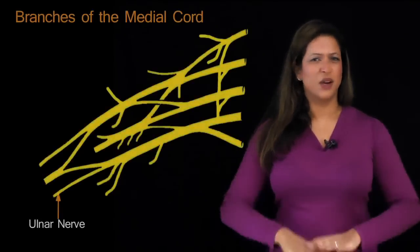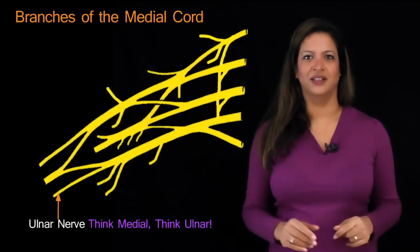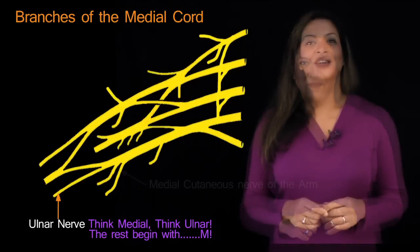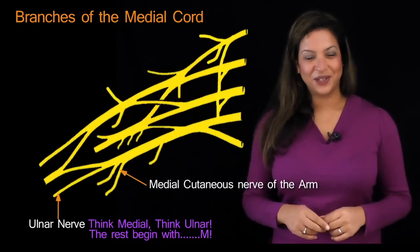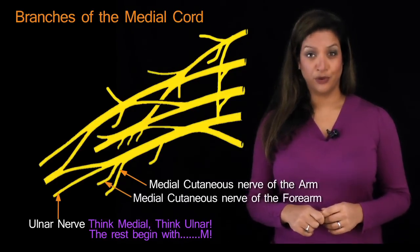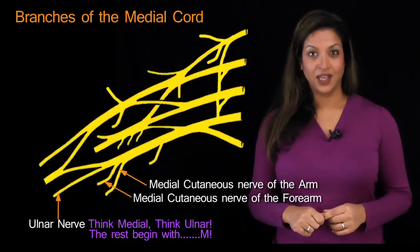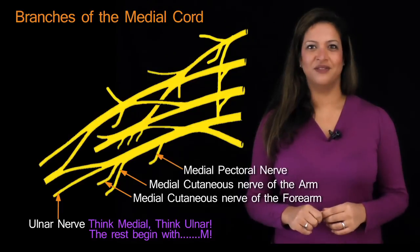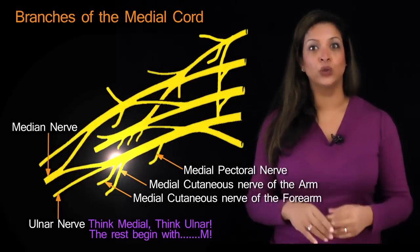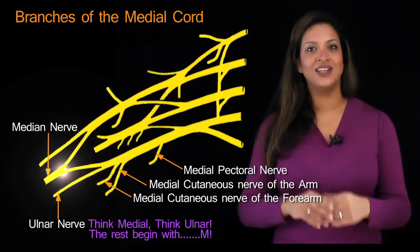The final cord, the medial cord, gives off five branches. The first is the ulnar nerve — whenever you think medial, think ulnar. The other four all begin with the letter M: the medial cutaneous nerve of the arm, the medial cutaneous nerve of the forearm, the medial pectoral nerve, and the contribution from the medial cord to the median nerve.